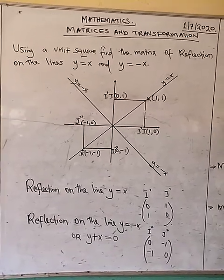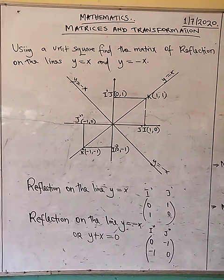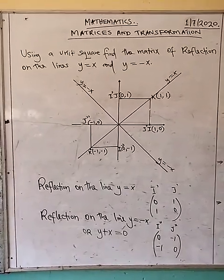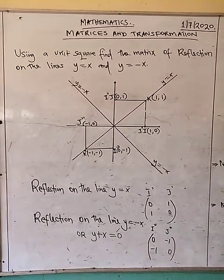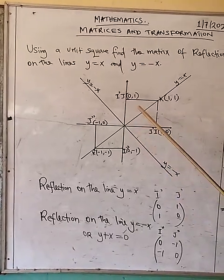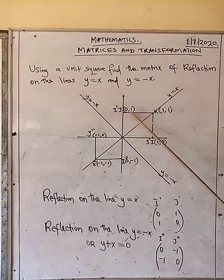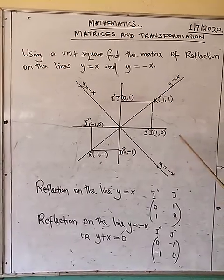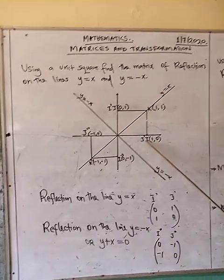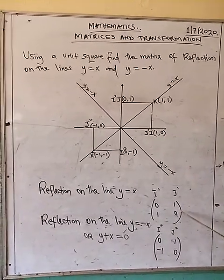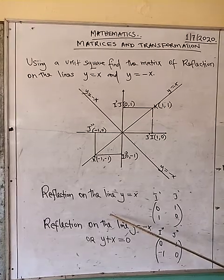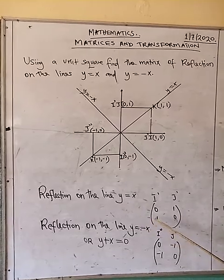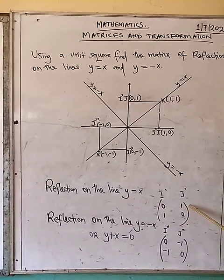As we come up with the matrix, we consider the coordinates of i' and j' followed in that order. If we look at the image of i after reflection, it is (0, 1), and we write it here as 0, 1. Then we look at the coordinate of j' after reflection — the coordinate is (1, 0). Therefore, the matrix that represents a reflection on the line y equals x is equal to [[0, 1], [1, 0]].